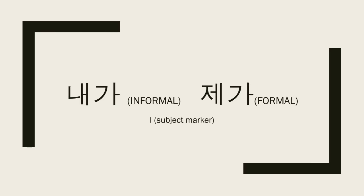Now we're going to attach I with the subject marker. But when you do so, it's no longer 나 or 저. When you add I to the subject marker, it actually changes to 내 and 제. So it becomes 내가 and 제가. Just remember that 내 together with 가 will be the subject of the sentence meaning I. And 제 with 가 — it's going to be the subject of the sentence, also meaning I.